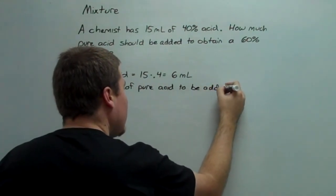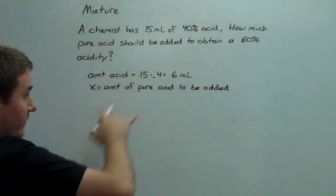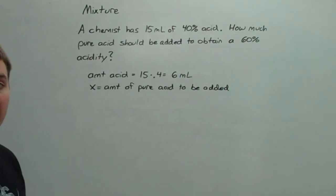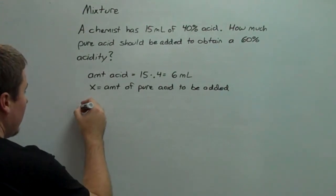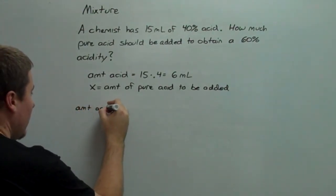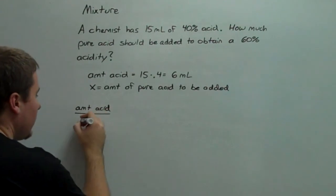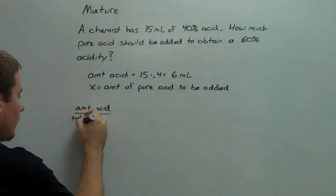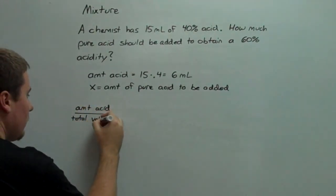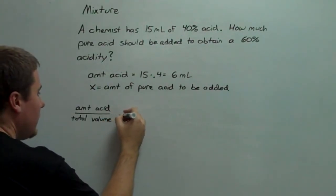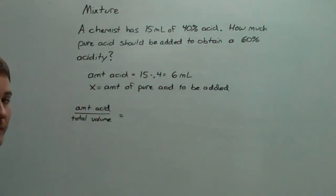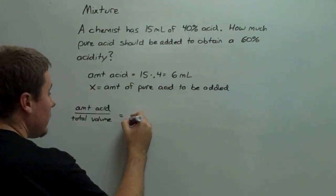Now, the way percentages like these are calculated is you take the amount of acid and you divide it by the total volume. And ideally, according to the problem, we get 60%, or 0.6.